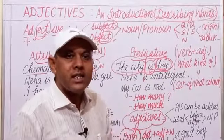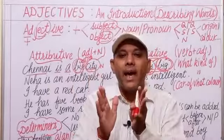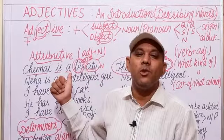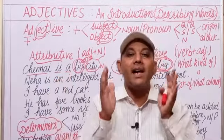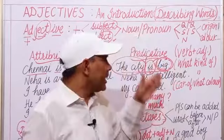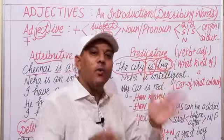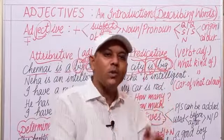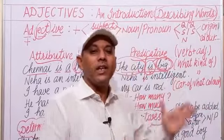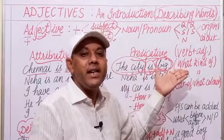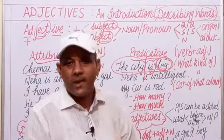There is a very clear difference: if an adjective is used just before a noun, we call it attributive use. If it is used after the noun or with the verb, we call it predicative use, because it becomes part of the predicate in that sentence.